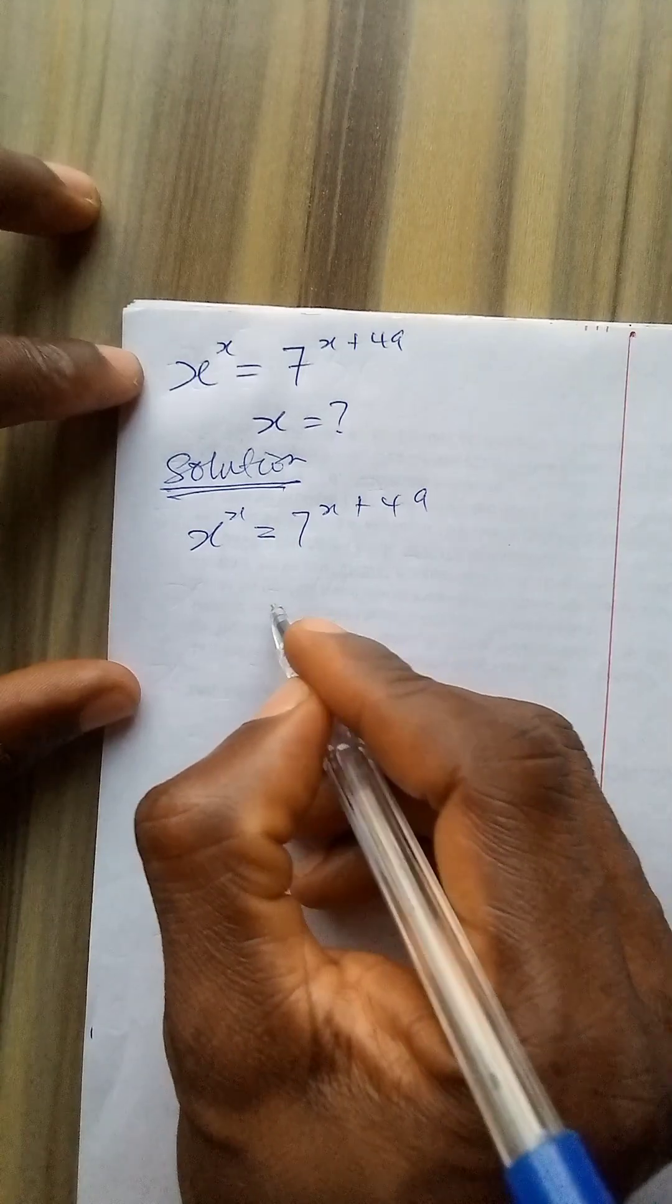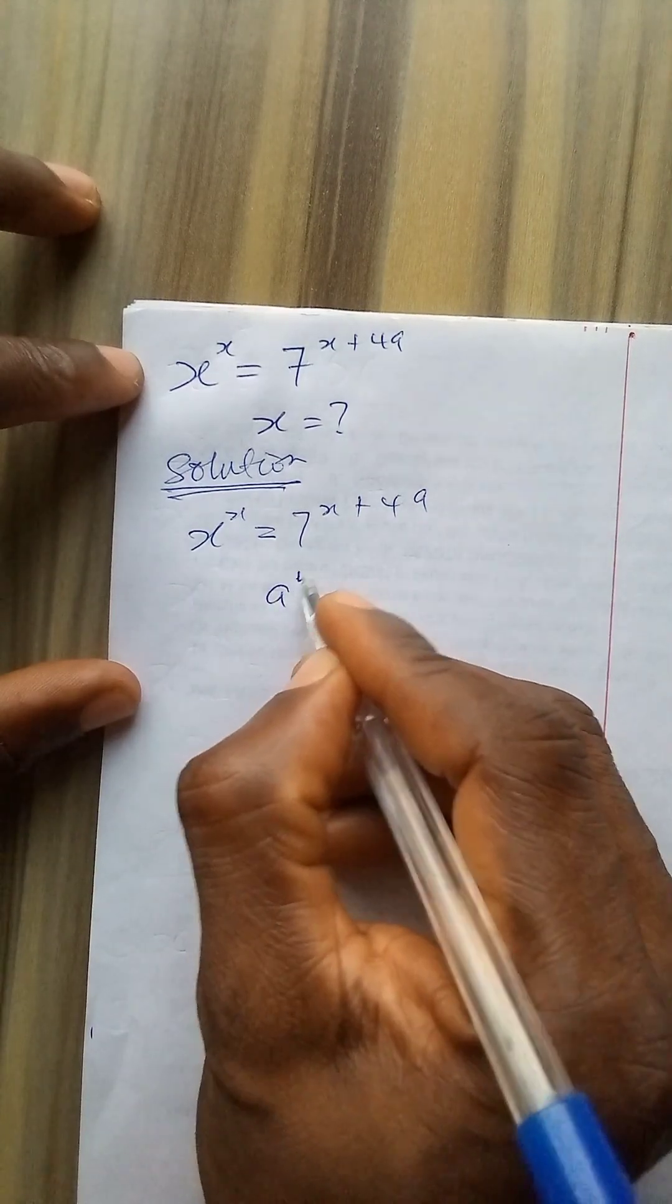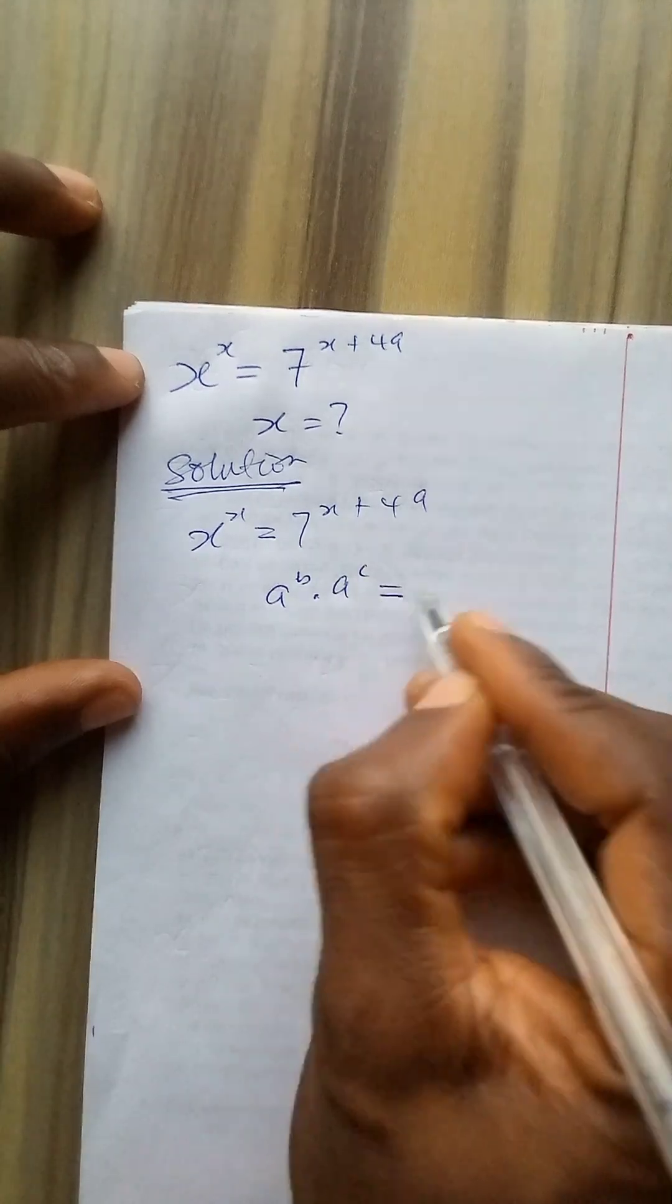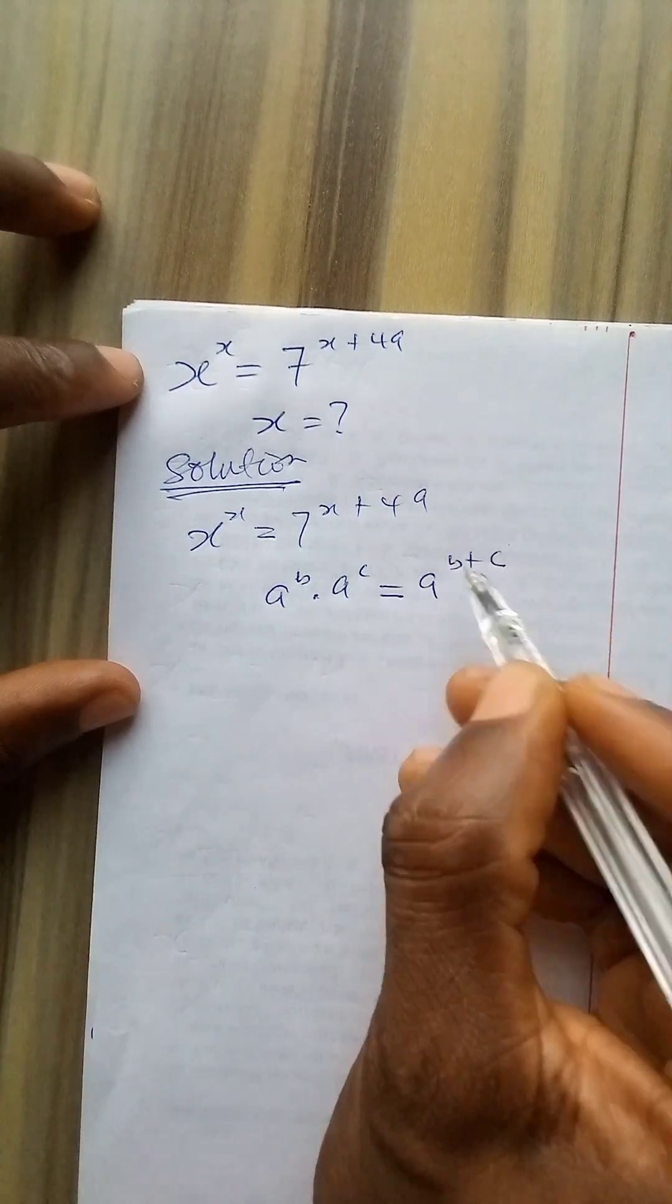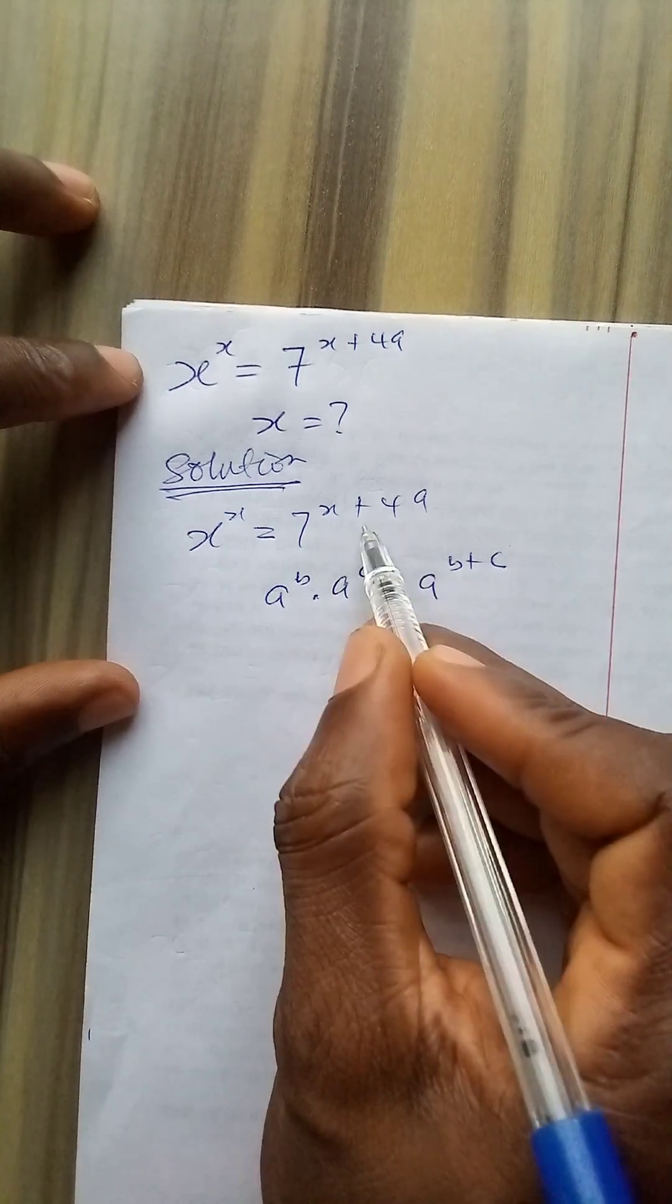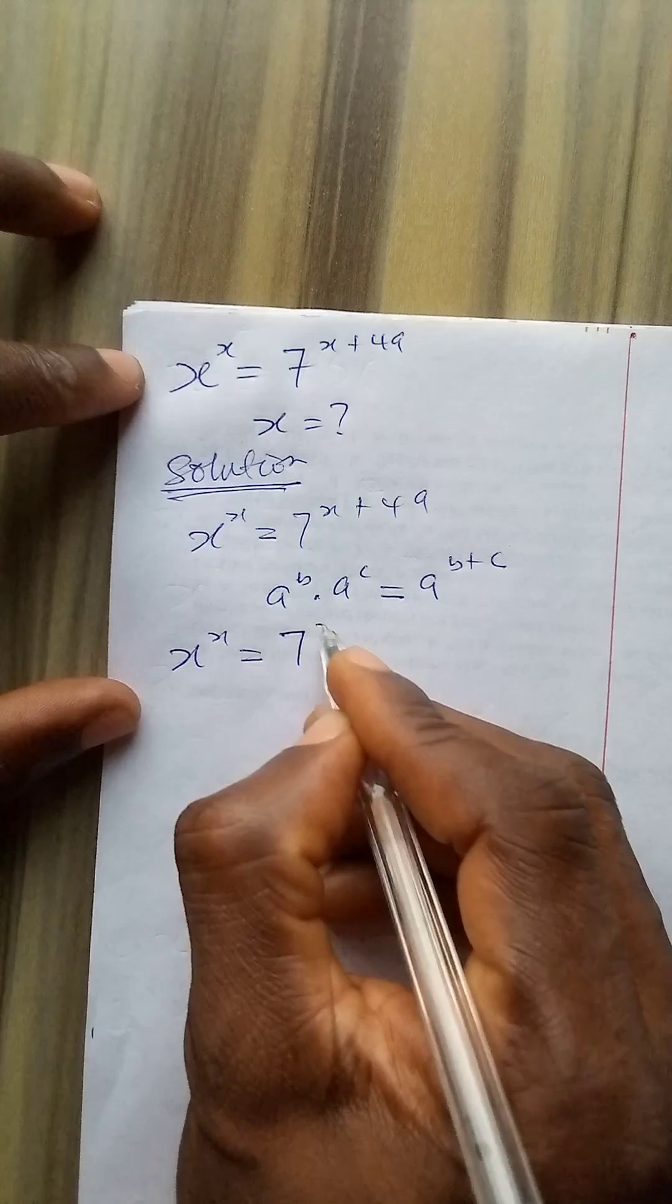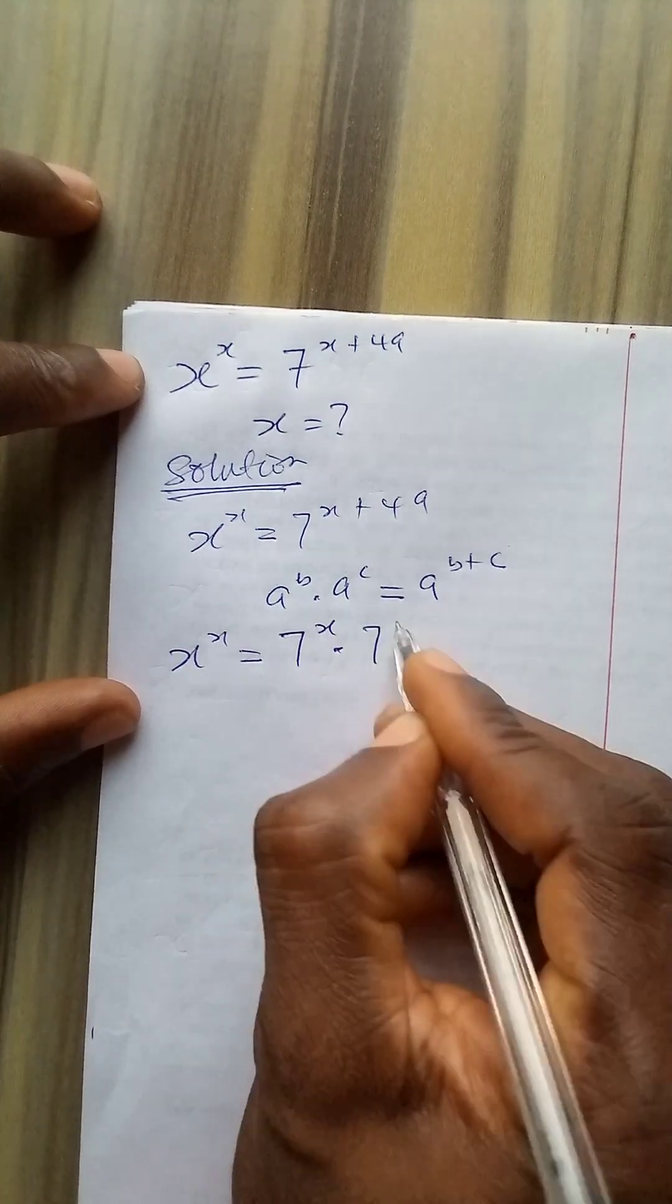Now the addition law is a to power b times a to power c equals a to power b plus c. This law will be applied here in reverse. So I have x to power x equals 7 to power x times 7 to power 49.